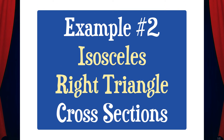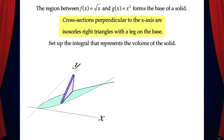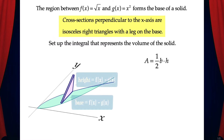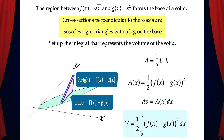Example 2: isosceles right triangle cross-sections. We'll use the same region as the previous example, but now cross-sections perpendicular to the x-axis are isosceles right triangles with a leg on the base. The area of a triangle is one-half base times height, and for an isosceles right triangle the base and height are equal. So A(x) = ½ · (f(x) − g(x))², and the integral for the volume is ½ times the integral from 0 to 1 of (f(x) − g(x))² dx.